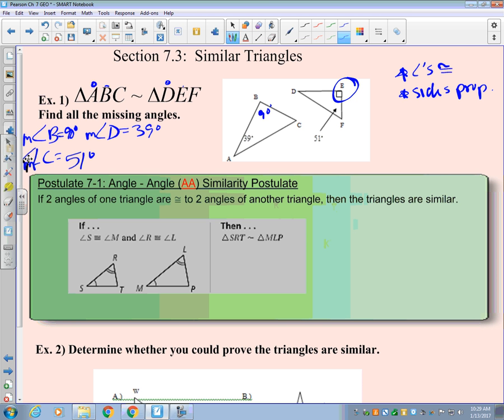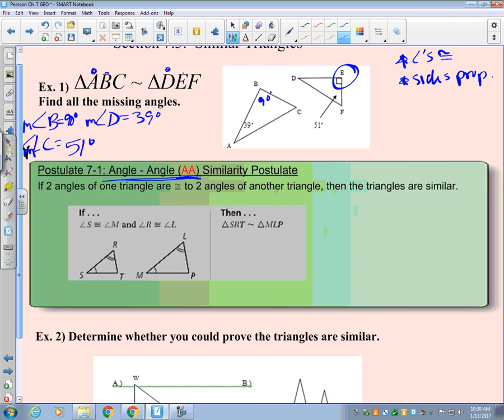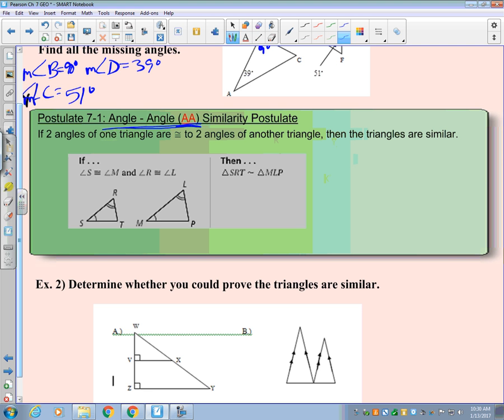So we're going to take a shortcut with triangles. When we have two triangles, we only have to prove that two of the angles are congruent, and then we have proven them similar. Because if all the angles in a triangle add up to 180, and two of them are already congruent, then that third one also has to be congruent. So when you're asked to prove that a triangle is similar, all you have to do is show that two of the corresponding angles are congruent, and then you're good to go. So in this case, if S and M are congruent, and R and L are congruent, we can say that triangle SRT is similar to triangle MLP.